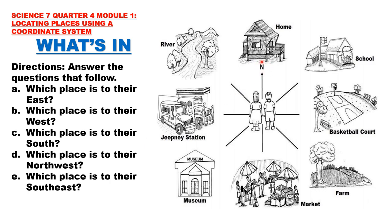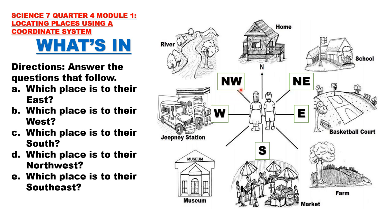If this is our north, then this will be the south, east, and west. North, south, east, and west are your four major directions. Now between north and east, we have northeast. Between north and west, we have northwest. Between south and east, we have southeast. And between south and west, we have southwest.